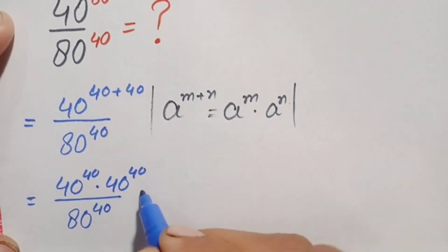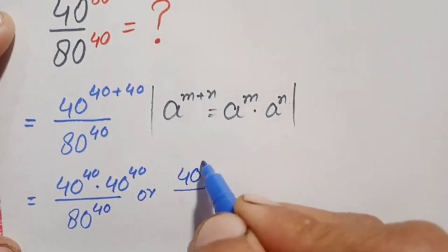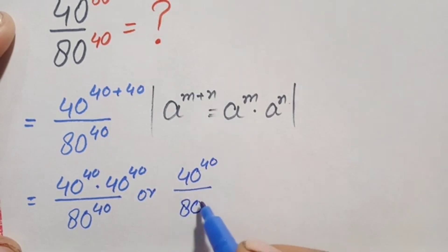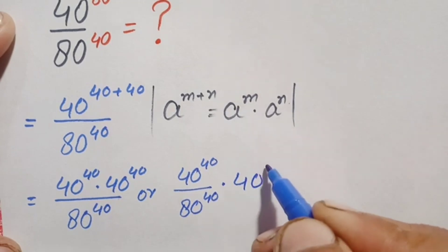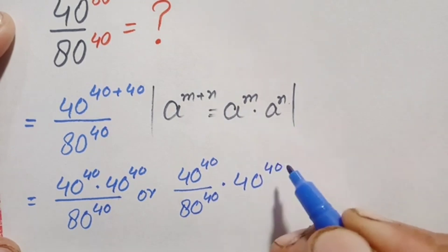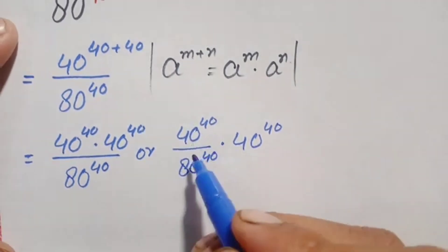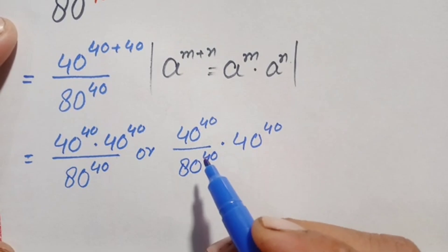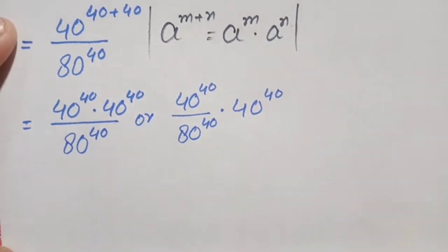We can rewrite this as 40 raised to power 40 divided by 80 raised to power 40, times 40 raised to power 40. Now looking at the left-hand number, both the numerator and denominator have the same power, so we apply the same-power exponential identity.